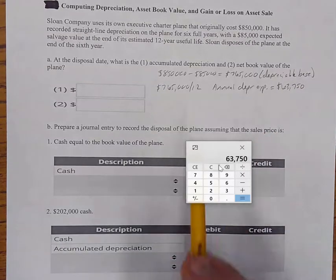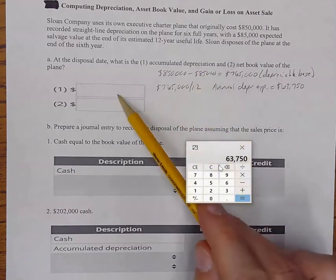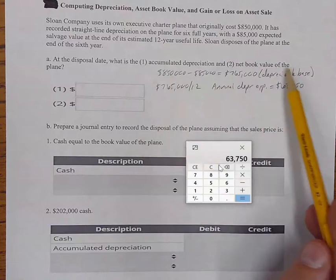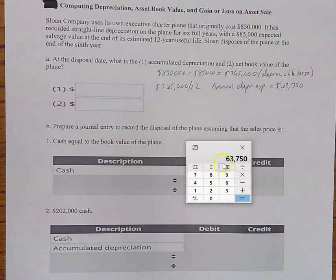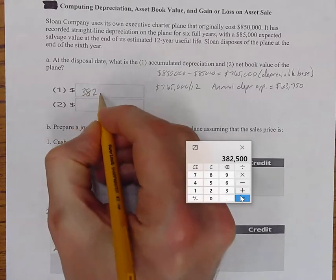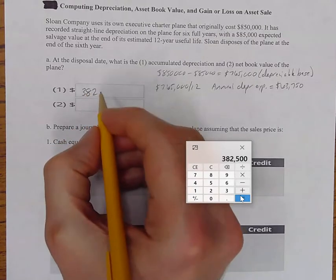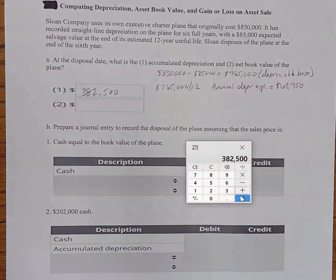So they want to know what is accumulated depreciation for box one and net book value of the plane box two. Well, accumulated depreciation is very easy, especially since we've got the annual depreciation amount right here on the calculator. All we have to do is just multiply by six. And that's going to give us $382,500.